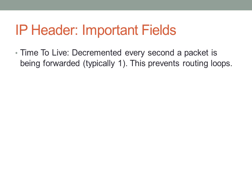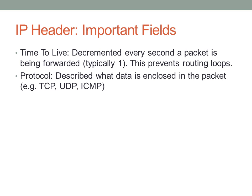The idea behind time to live is that we don't want a packet to circulate endlessly. IP provides a time limit for a packet. Originally the time to live was measured in seconds, and back when routers were still being developed it could take more than one second to route a packet from one network to another. In modern networks it doesn't take that long, so the time to live field is simply decremented by one each hop. The protocol field describes what's in the IP packet — for example TCP or UDP — making it easier for routers to inspect the datagram.